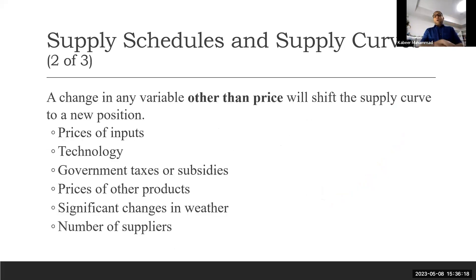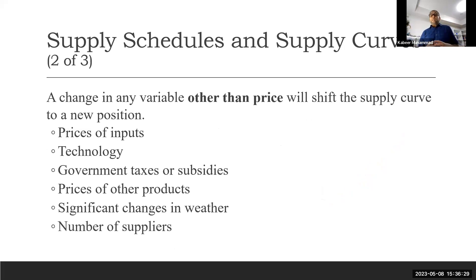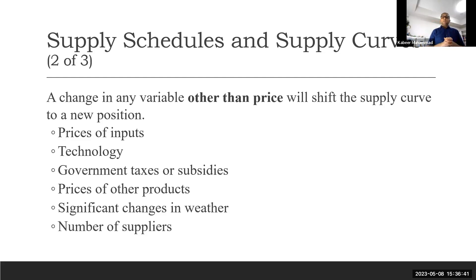If the price is changing, then we move along the curve. But there are other variables that can cause a shift of the supply curve — it can shift to the right or to the left. A change in any variable other than price will shift the supply curve to a new position. Those variables can be prices of inputs.